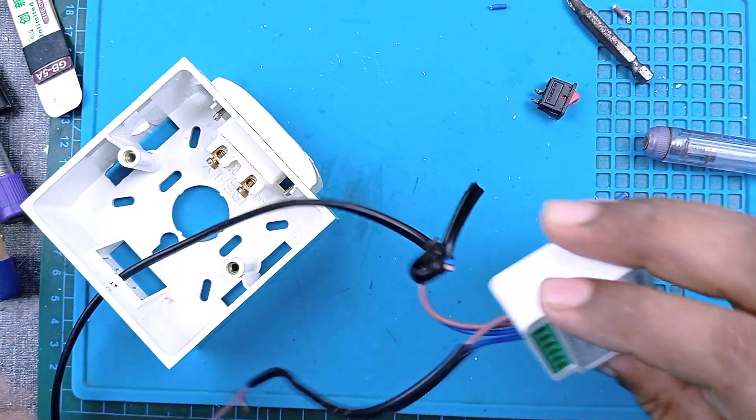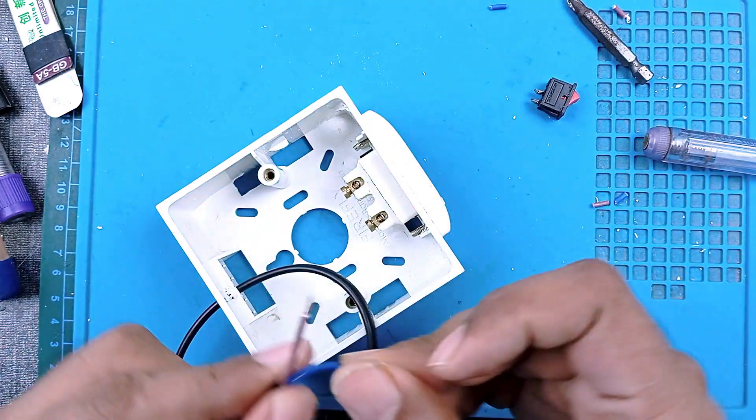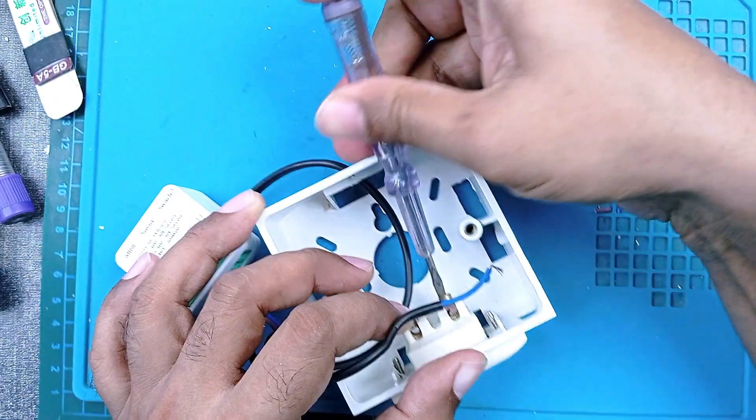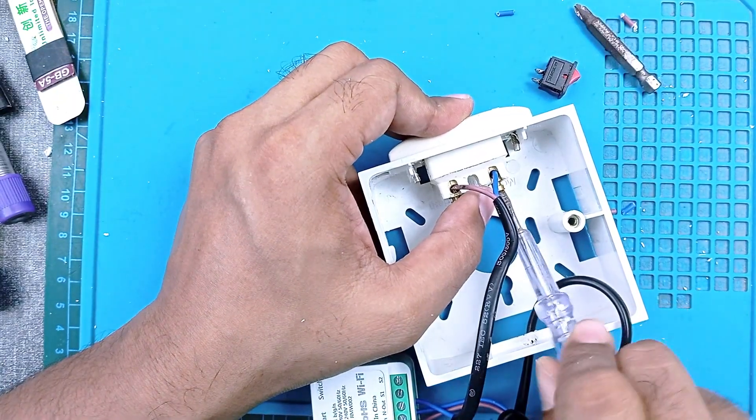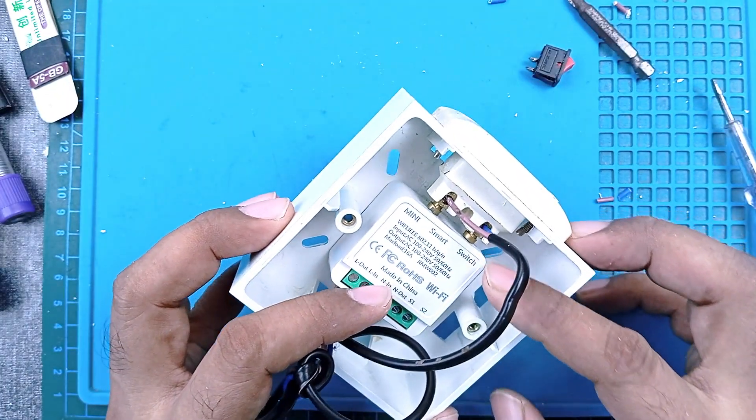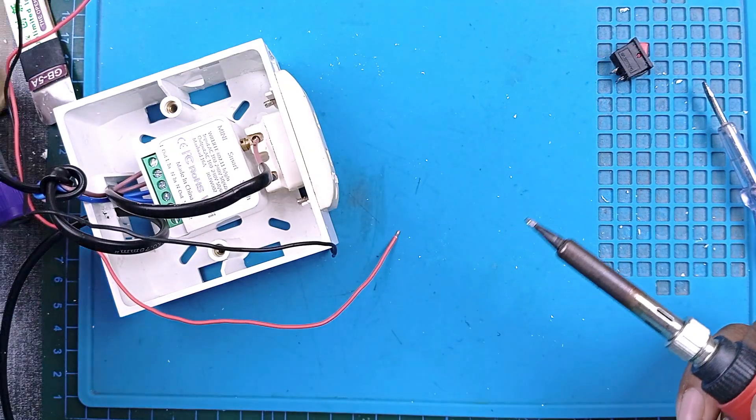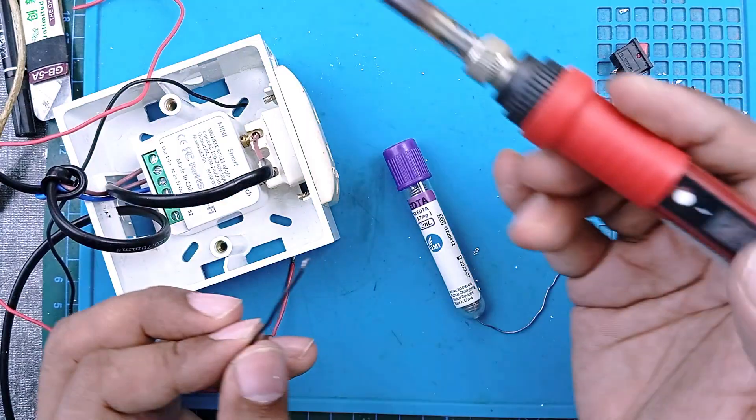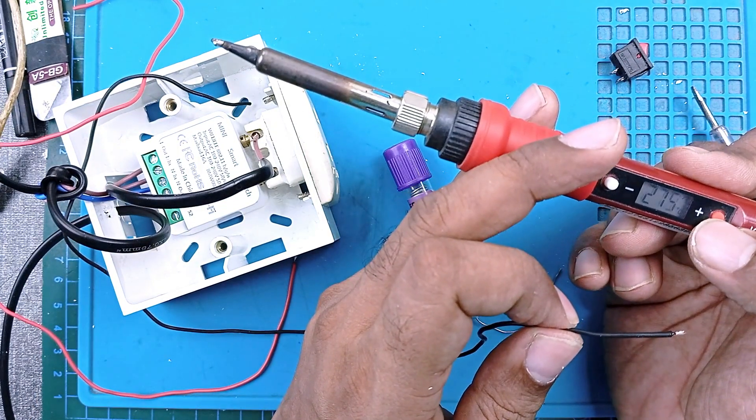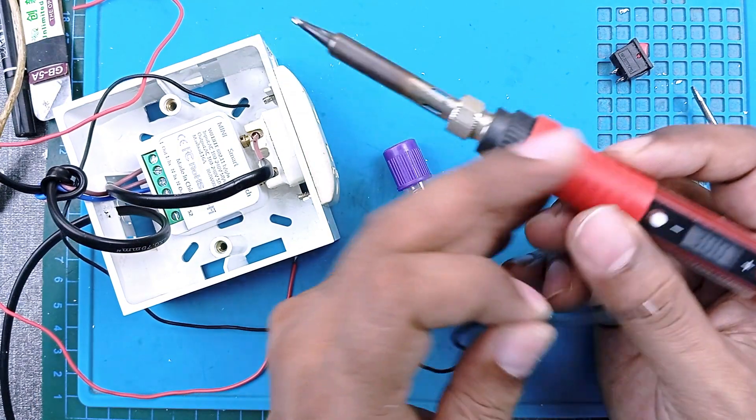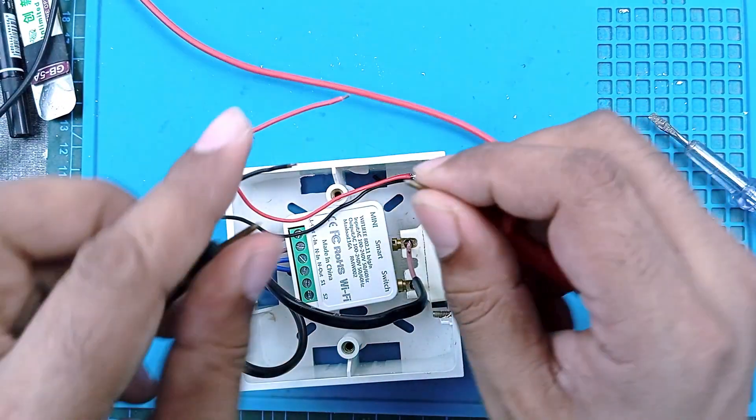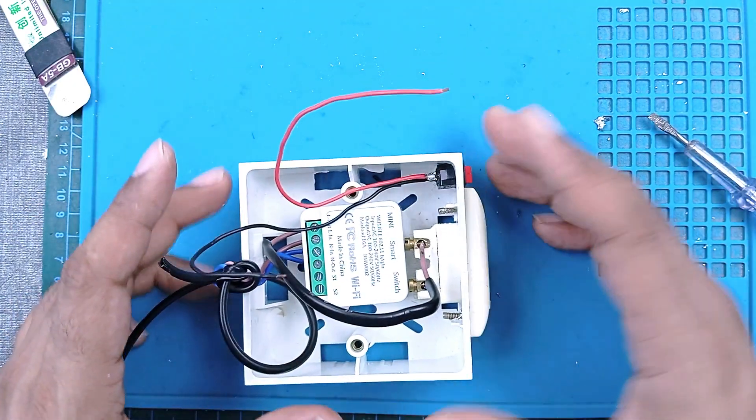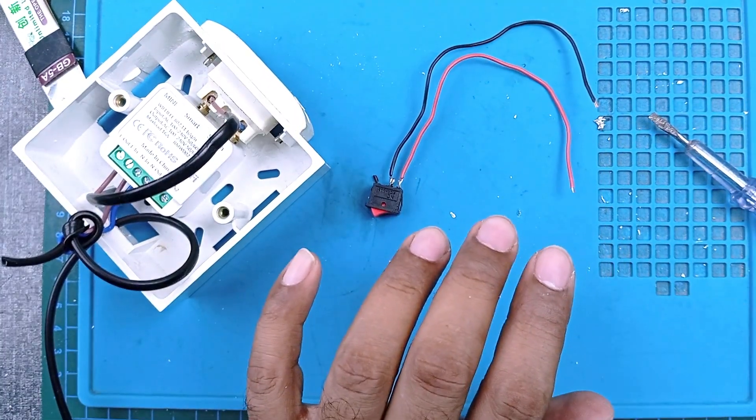Let's use this piece for output: supply line out, neutral out. Connect it to the socket and tighten the screws. I need more temperature, 300 degrees maybe. Let's see if our switch is okay. Yes, the switch is good, so we can go forward.